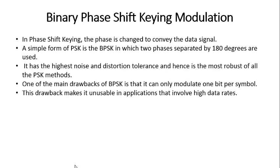The first form of modulation we are going to look at is phase shift keying. In phase shift keying, the phase is changed to convey the data signal. A simple form of PSK is binary phase shift keying, in which two phases are separated by 180 degrees. It has the highest noise and distortion tolerance and is the most robust of all PSK methods. One of the main drawbacks of BPSK is that it can only modulate one bit per symbol.